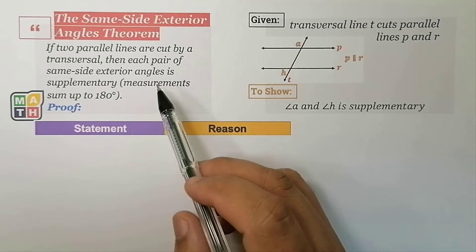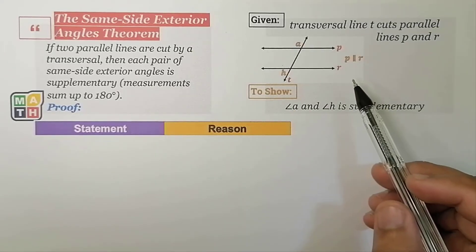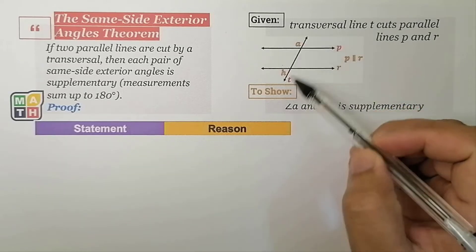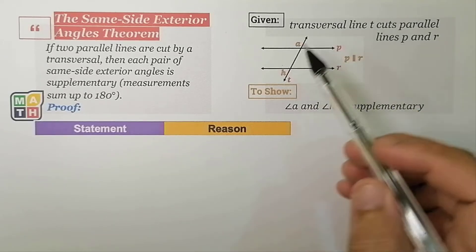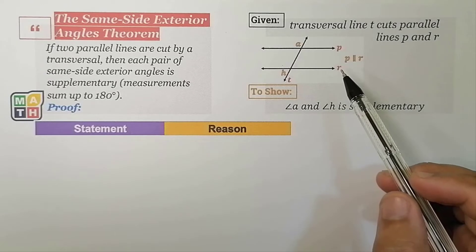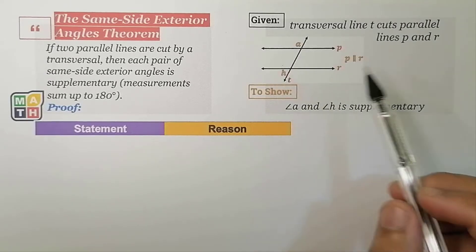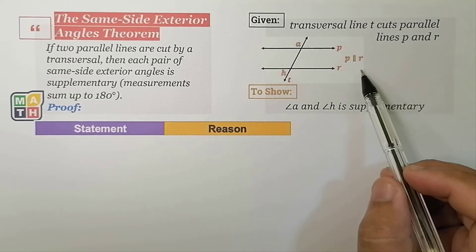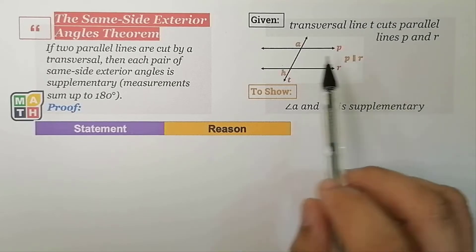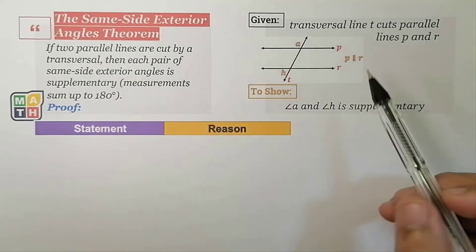To help us prove this theorem, we have here a figure showing a transversal line T cutting parallel lines P and R. Notice that lines P and R are given to be parallel so that it could actually capture the statement of the theorem.